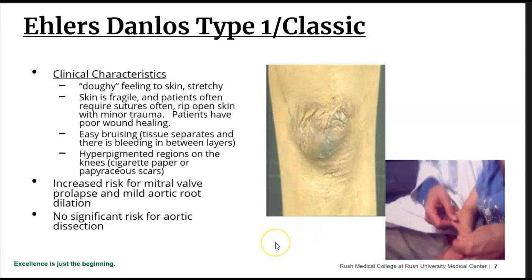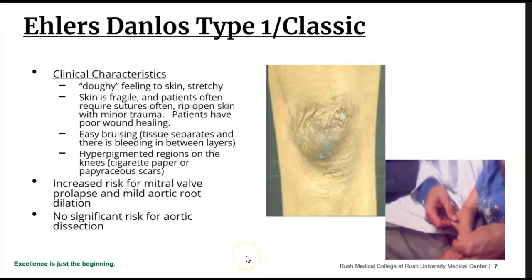They also have hyperpigmentation of the knee. When I see these patients in the summer wearing shorts, I can look at their knees — I can do half the exam before getting up from the chair — and see the extra skin and dark pigmentation. This is known as the papyrus or cigarette paper scar. There is an increased risk for mitral valve prolapse and mild aortic root dilatation, but no significant risk for aortic dissection.